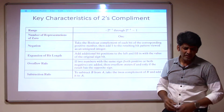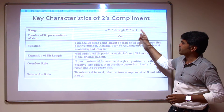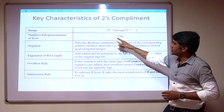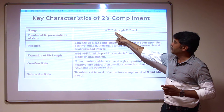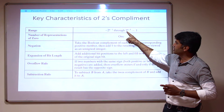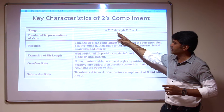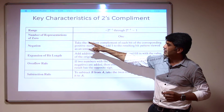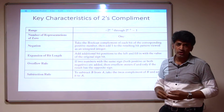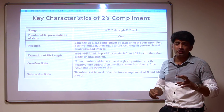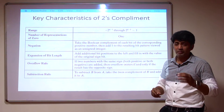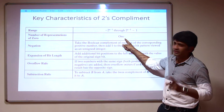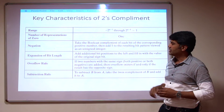On the next slide, we will see the key characteristics of 2's complement. The first characteristic is the range, which is from minus 2 to the power (n minus 1) through 2 to the power (n minus 1) minus 1. Then for the number zero, in sign magnitude there were two representations for 0 — minus 0 and plus 0 — but that drawback has been overcome here. In 2's complement there is only one representation for 0.